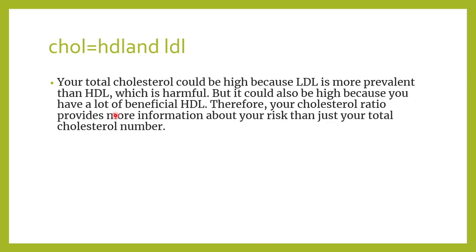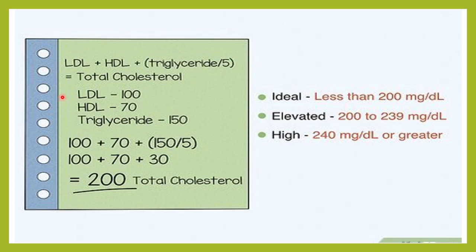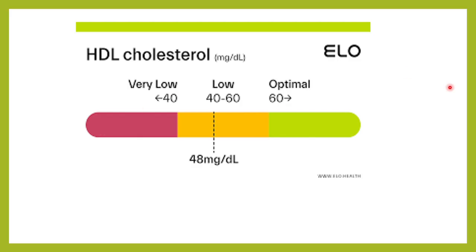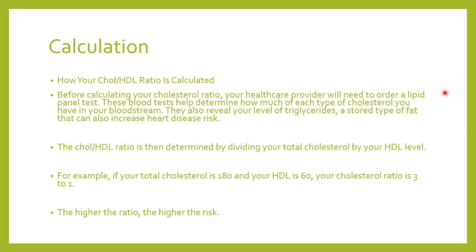Total cholesterol equals LDL plus HDL plus 20% of triglycerides. For example: LDL 100, HDL 70, triglycerides 150 — 150 divided by 5 is 30 — giving a total of 200. A cholesterol level below 200 is ideal; between 200 and 239 is elevated; above 240 is high. For HDL, above 60 is optimal. Above 40 in men and above 45 in women is acceptable. Below 40 or 35 is considered low HDL and is a risk factor.